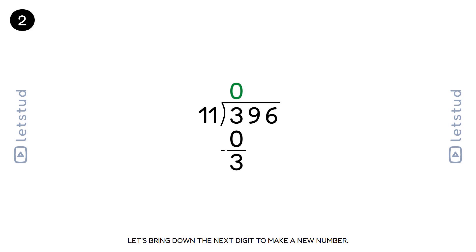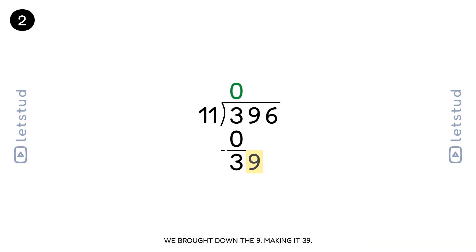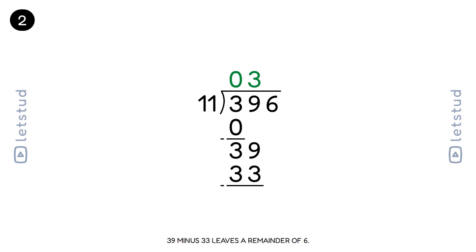Let's bring down the next digit to make a new number. Now we have 39. How many times does 11 fit into 39? It fits 3 times. We brought down the 9, making it 39. 11 fits into 39 3 times. 3 times 11 is 33. 39 minus 33 leaves a remainder of 6.